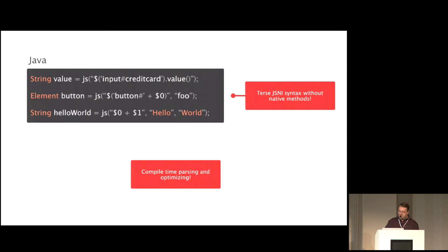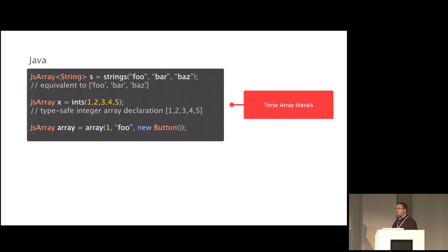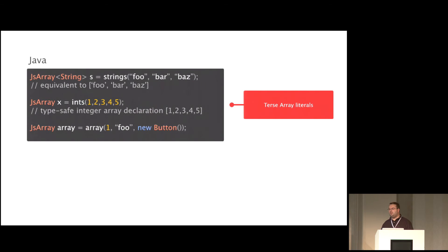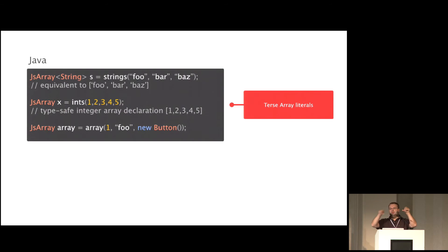There will also be magic functions for terse array literals. If you say strings() and pass in a list of strings, the compiler will literally put down a square bracket with the string arguments — a really terse way to get an array literal in Java. You can do it with integers, or with a heterogeneous array — like number, comma string, comma object — which is basically the same as writing square brackets with three values in JavaScript.